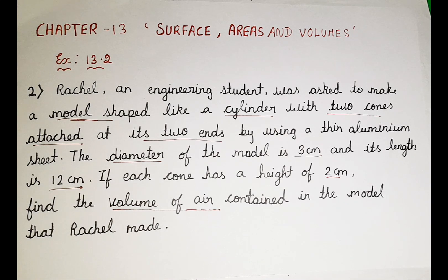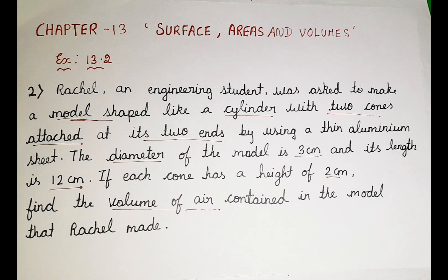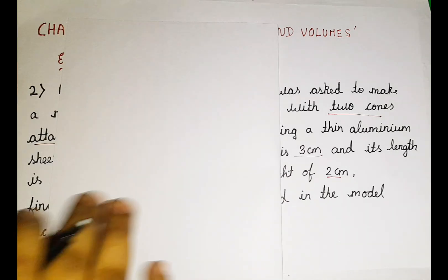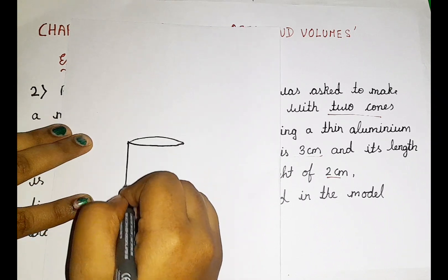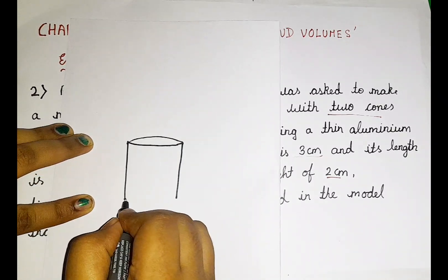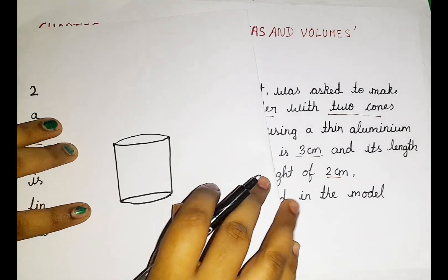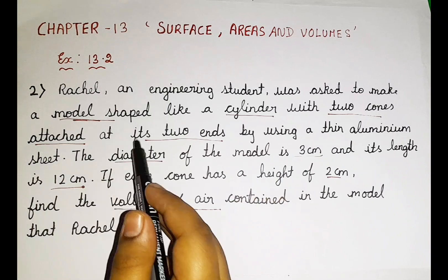Now we are supposed to draw a figure. Whenever we want to understand the question, first of all we are supposed to draw a figure. So according to this question, Rachel made a model in the shape of a cylinder. So first of all let us draw a cylinder. This is a cylinder. According to the question, there is a cylinder with two cones attached at its two ends.